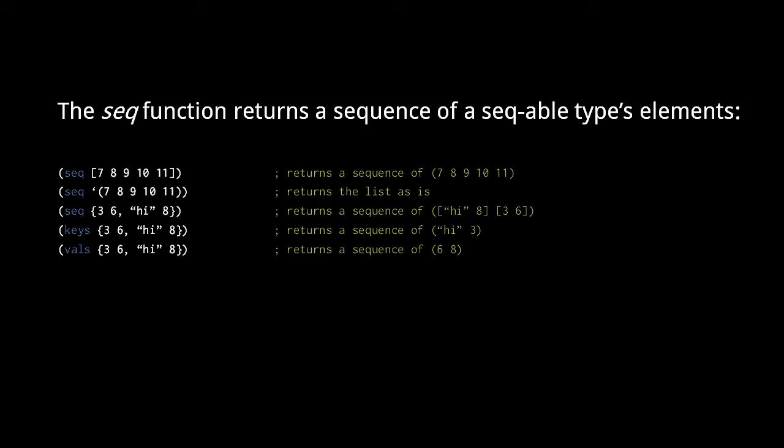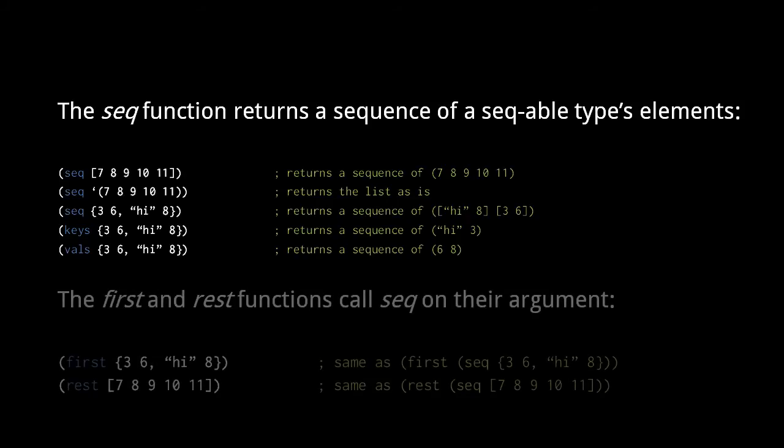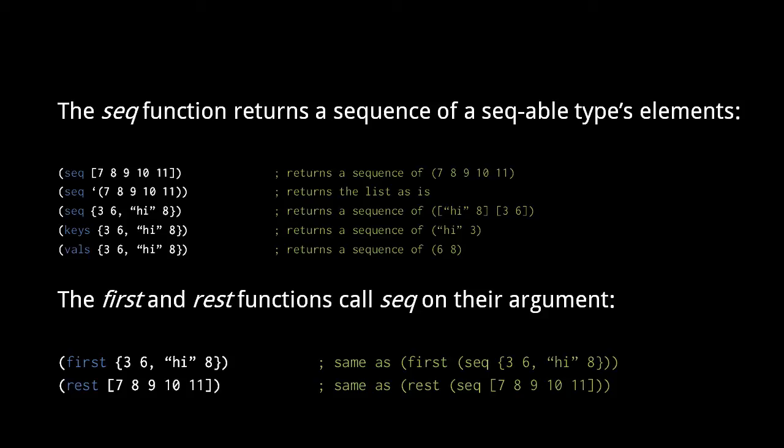So, that's why some collections are themselves sequences, but others are merely seqable. In practice, though, the distinction is usually not that important, because most functions that operate on sequences, including the first and rest functions, actually call seq on their argument. So here, when we use first and rest on a map and vector, we can pass the map and vector directly, rather than call seq on them ourselves.